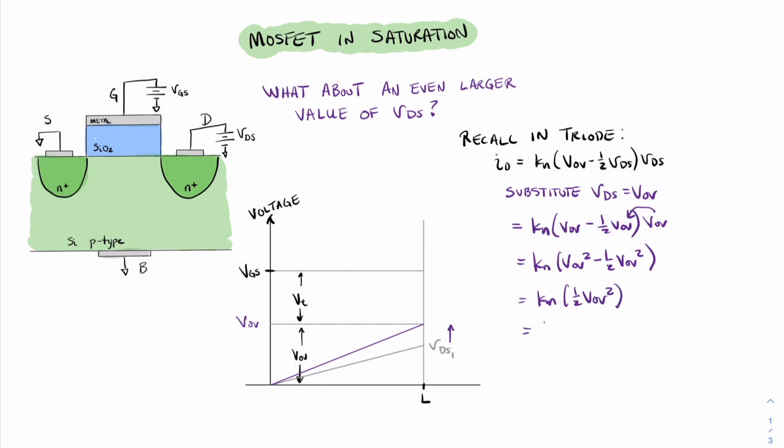Rearranging this equation, we can get one-half KN VOV squared. And this final equation right here, one-half KN VOV squared, is the equation for current in saturation mode.